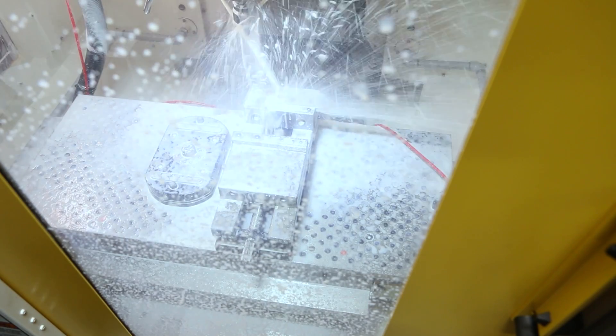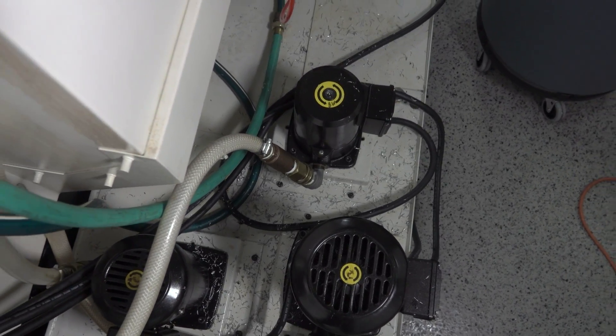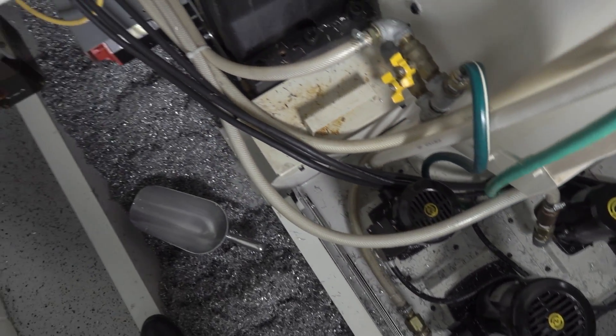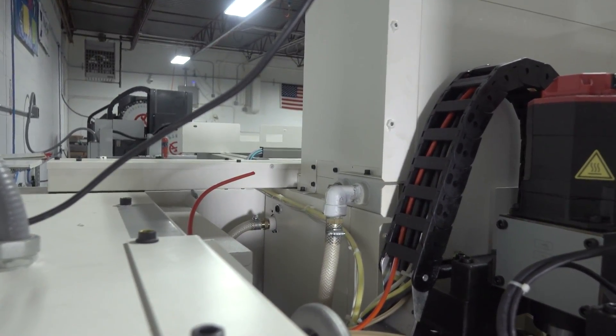We did add a one-way check valve to the tool coolant line. It was taking a few seconds for the coolant to pump all the way up the column and back down the spindle, by which time this machine's rapids had it already deep in the cut and gumming up tools with aluminum.